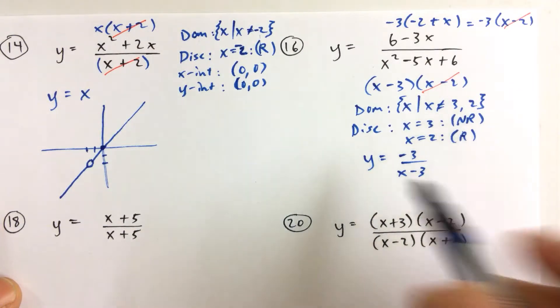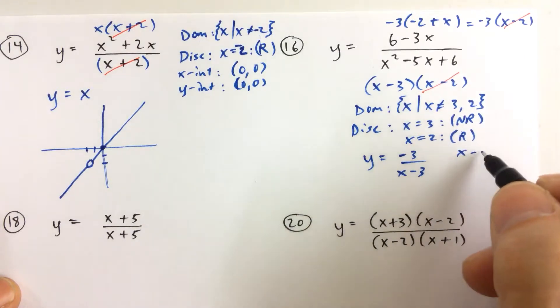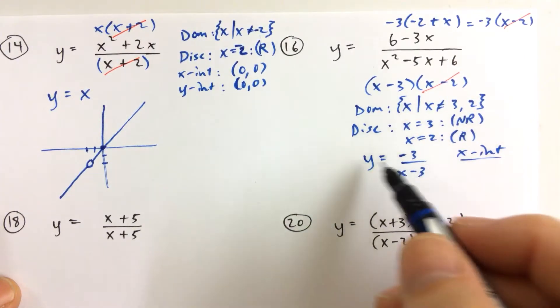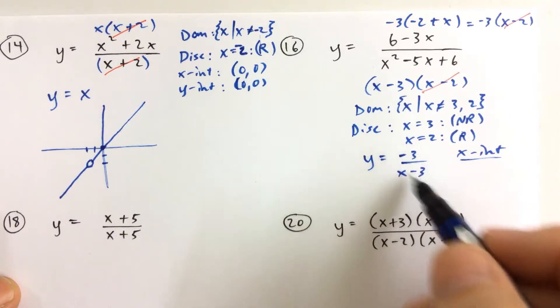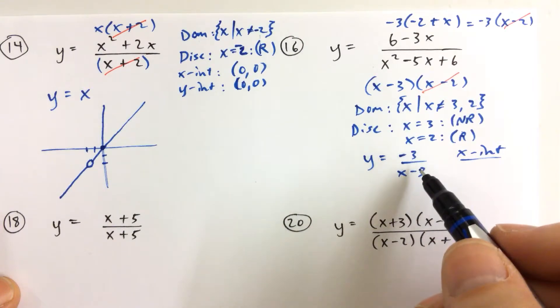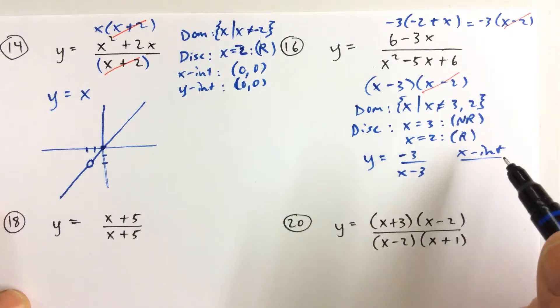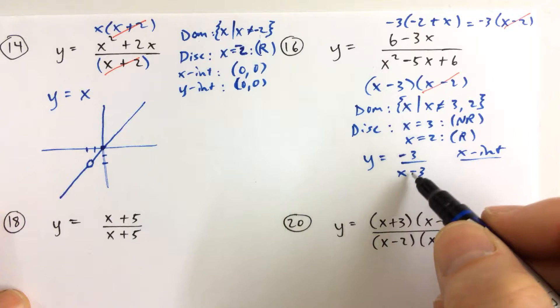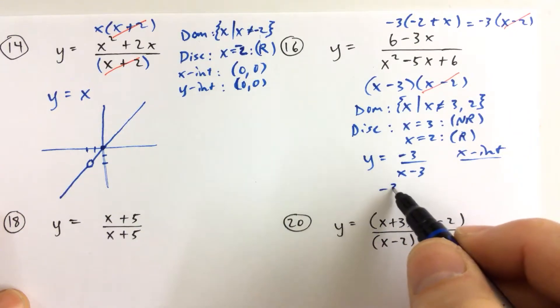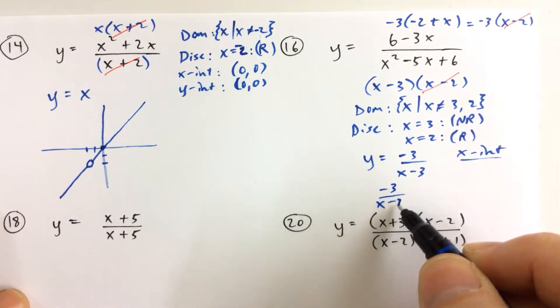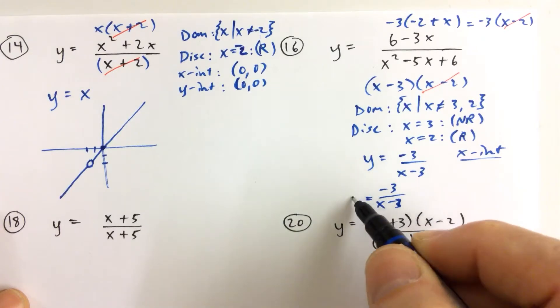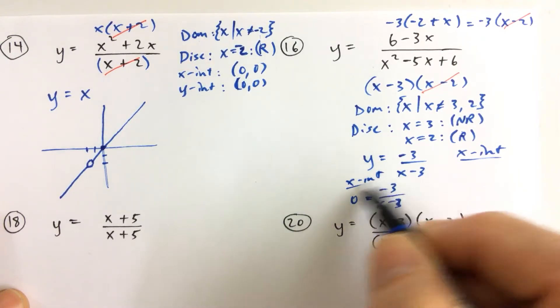Now, if we let y equal 0 to find the x-intercept, this function here, this expression, can never be equal to 0. So this is something to really tuck away because you use this in Algebra 2 and Pre-Calc as well as all other levels. When a fraction has a value of 0, so this equation right here, negative 3 over x minus 3 equals 0, this is when we're finding our x-intercept.